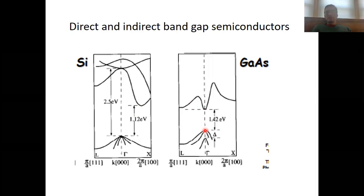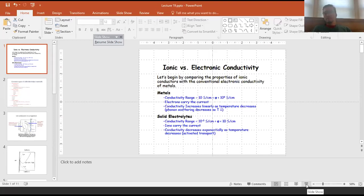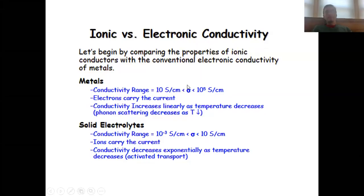So this was the chapter about electronic conductivity in extended solids. What I would like to do now is to discuss in more detail the ionic conductivity in extended solids, which is just as important as the electronic conductivity, especially in electrochemical devices such as batteries or fuel cells.